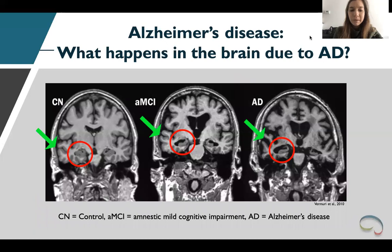Going deeper into imaging — what exactly happens in the brain due to AD? On the left, you see a T1 MRI image, coronal view, of a healthy control with the hippocampus encircled in red and the green arrow pointing at the temporal cortex, both showing no atrophy. The patient in the middle, diagnosed with amnestic mild cognitive impairment, shows hippocampal atrophy, which is even more outspoken in the last patient diagnosed with Alzheimer's disease, showing significant temporal and hippocampal atrophy. During clinical routine, these and other findings are described by radiologists in a radiological report.